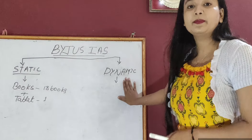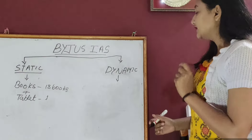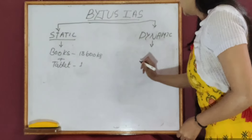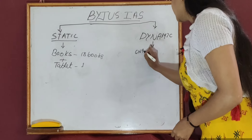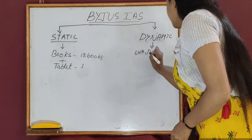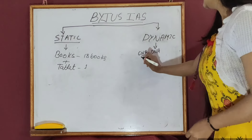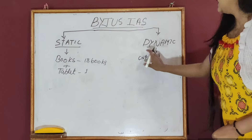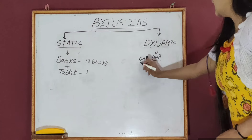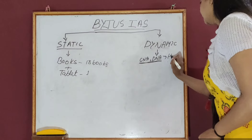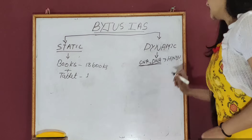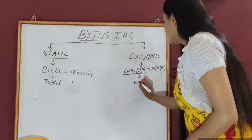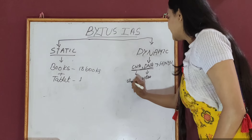Under the dynamic part — the current affairs section — the most important thing for UPSC is the news. For that, Byju's has a separate YouTube channel where they upload daily the CNA and the DNA. CNA is the Comprehensive News Analysis and DNA is the Daily News Analysis. In these two parts, they cover The Hindu newspaper. The DNA comprises the video part and the CNA comprises the written part.